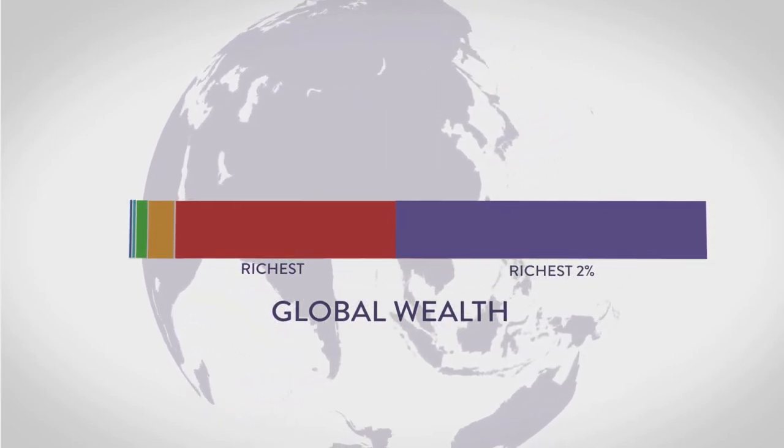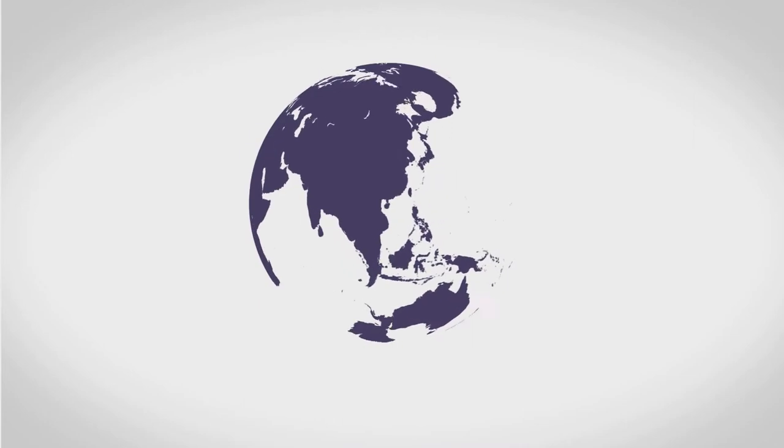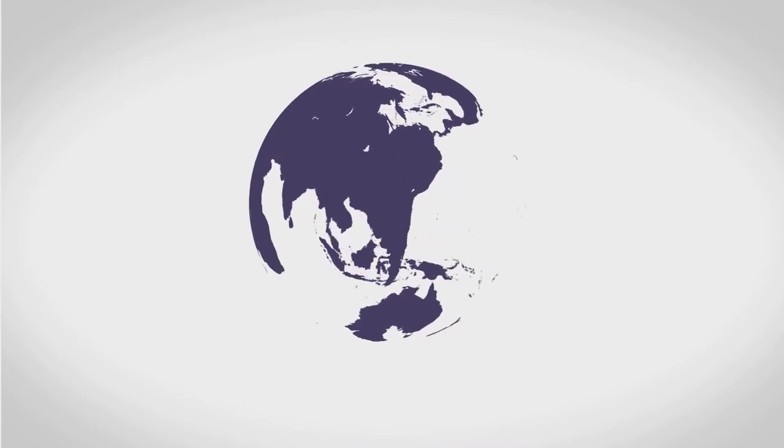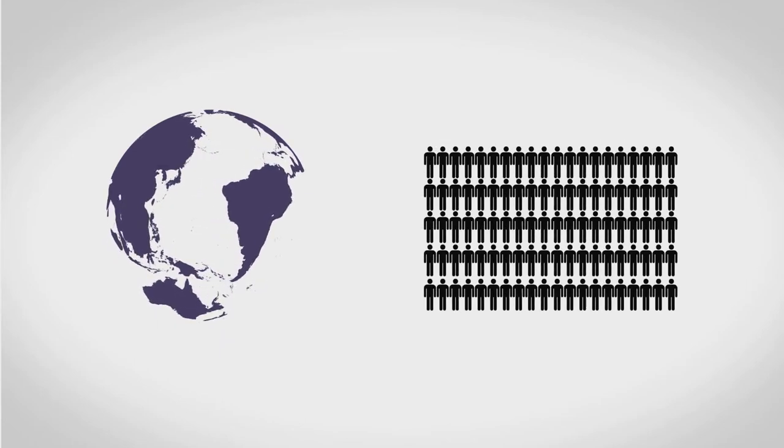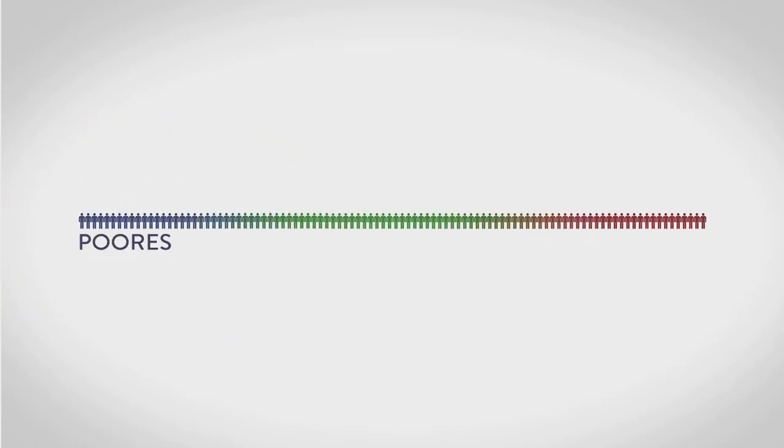Let's look at this chart another way. Let's take the whole world's population, all 7 billion of us, and reduce it to just a representative 100 individuals. Here they are, poorest people on the left, richest people on the right.